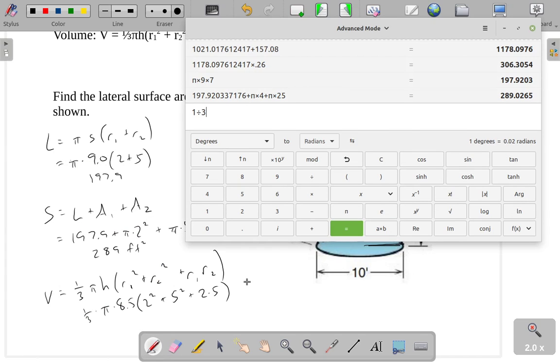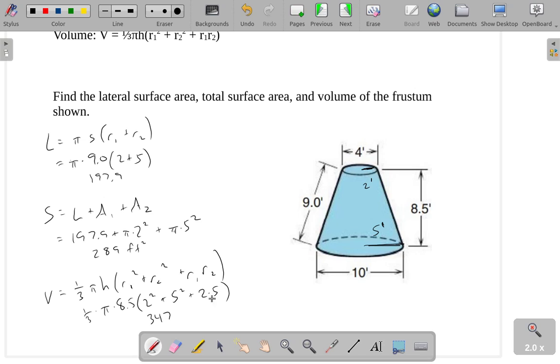So we get one-third times pi times 8.5 times parentheses. 2 squared is 4, 5 squared is 25, and 2 times 5 is 10. So we end up with a total volume of approximately 347 cubic feet.